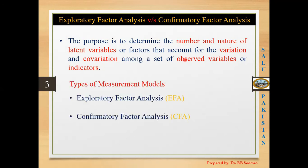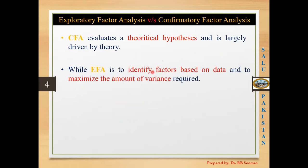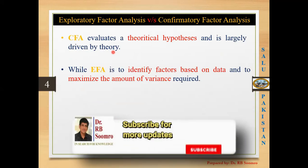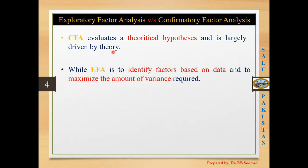There are two types of measurement models: Exploratory Factor Analysis (EFA) and Confirmatory Factor Analysis (CFA). Both are basically measuring latent variables. CFA is based on a certain theory — it means we are going to test the theory with the help of CFA. In order to apply CFA, you are required to develop some hypotheses.